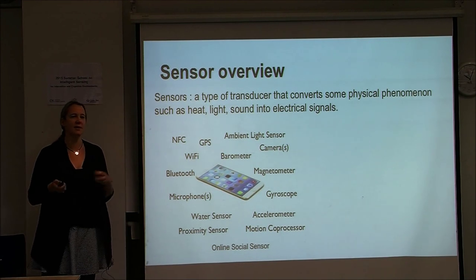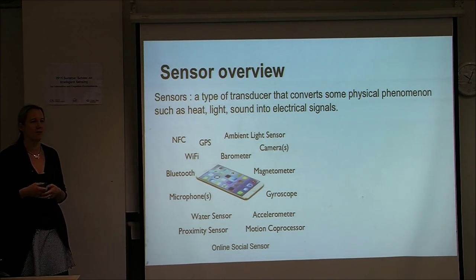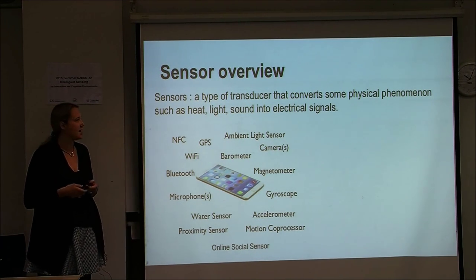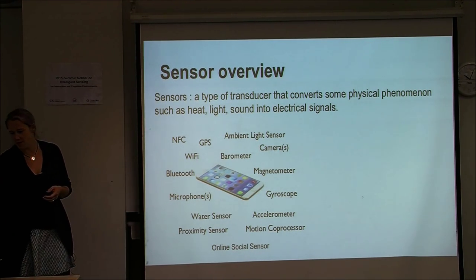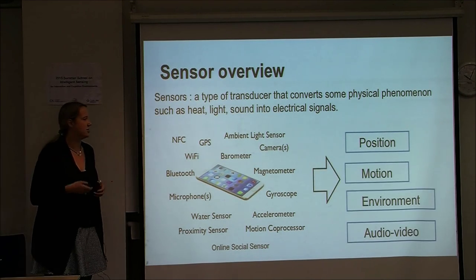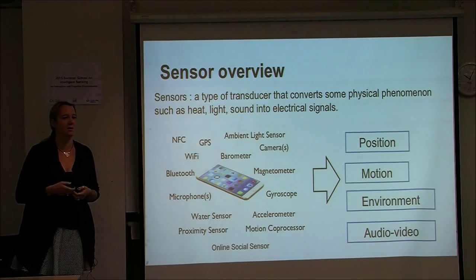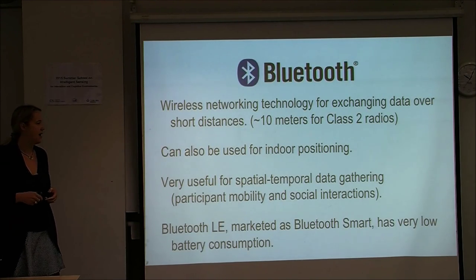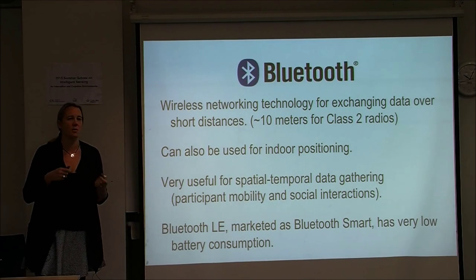I'll give an overview of the kinds of sensors used in mobile sensing — not all of them, but some of the most popular ones. These deal with position, motion, environment, and audio/video. For position you have GPS, Bluetooth, and Wi-Fi, all of which enable positioning.